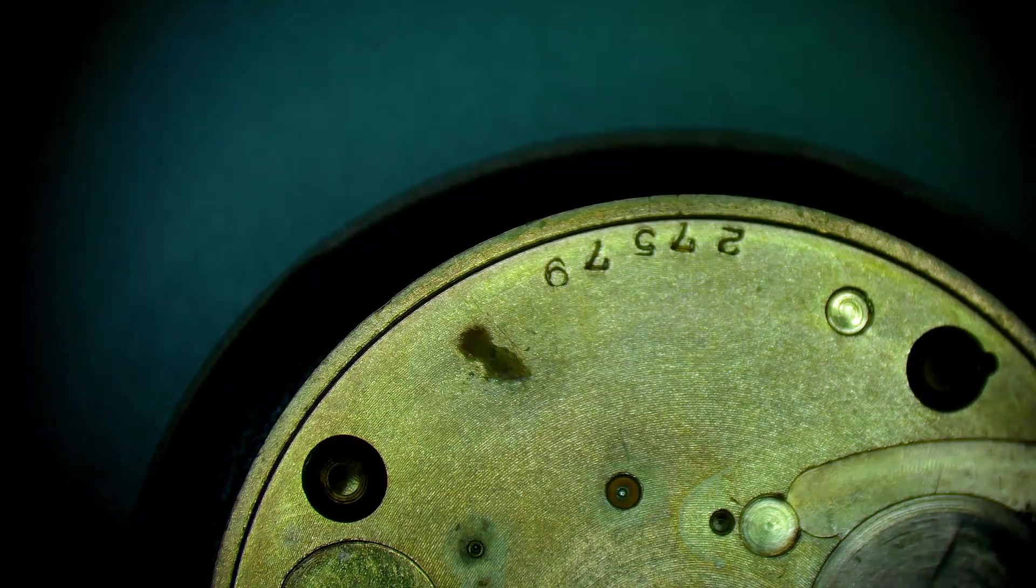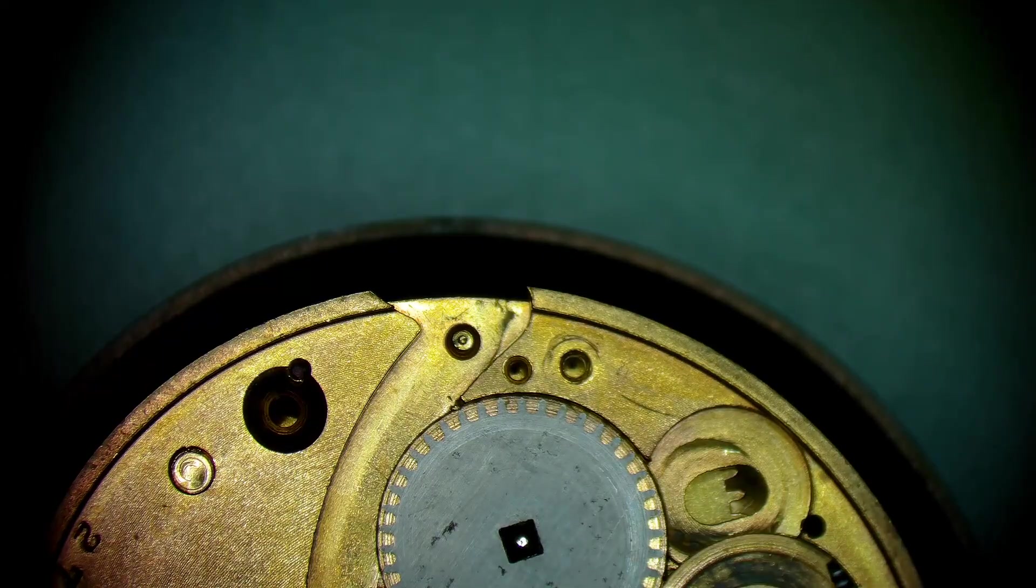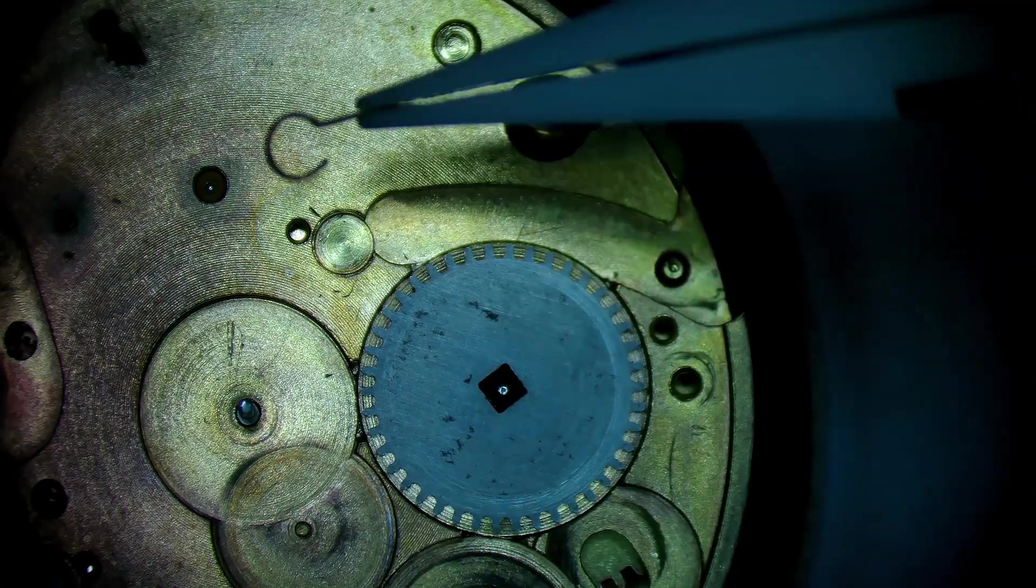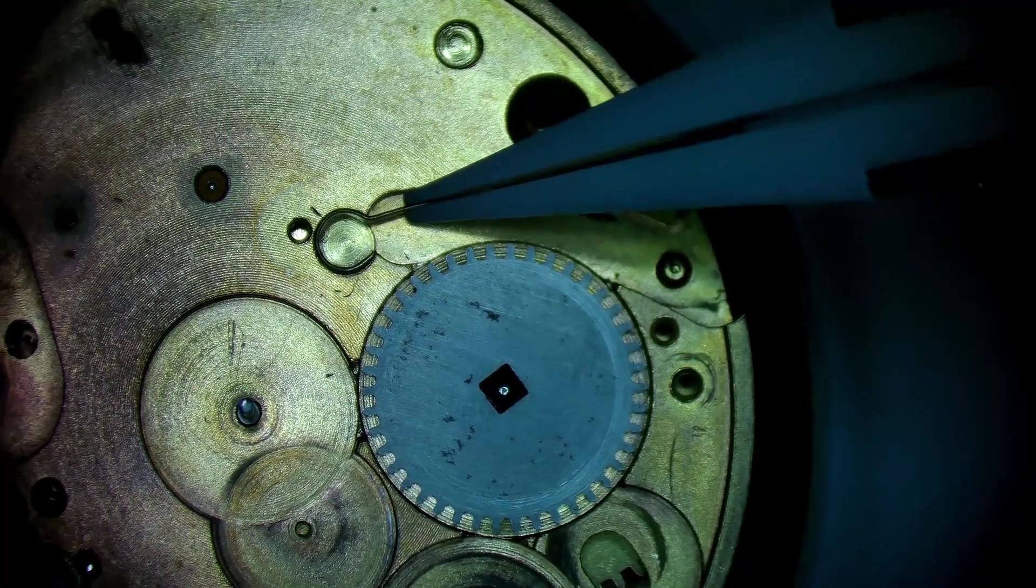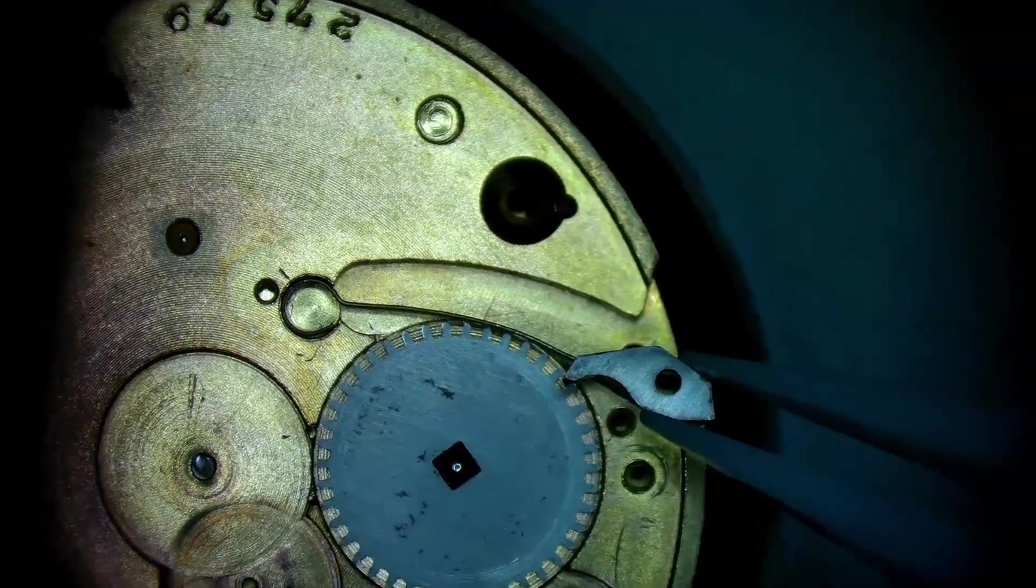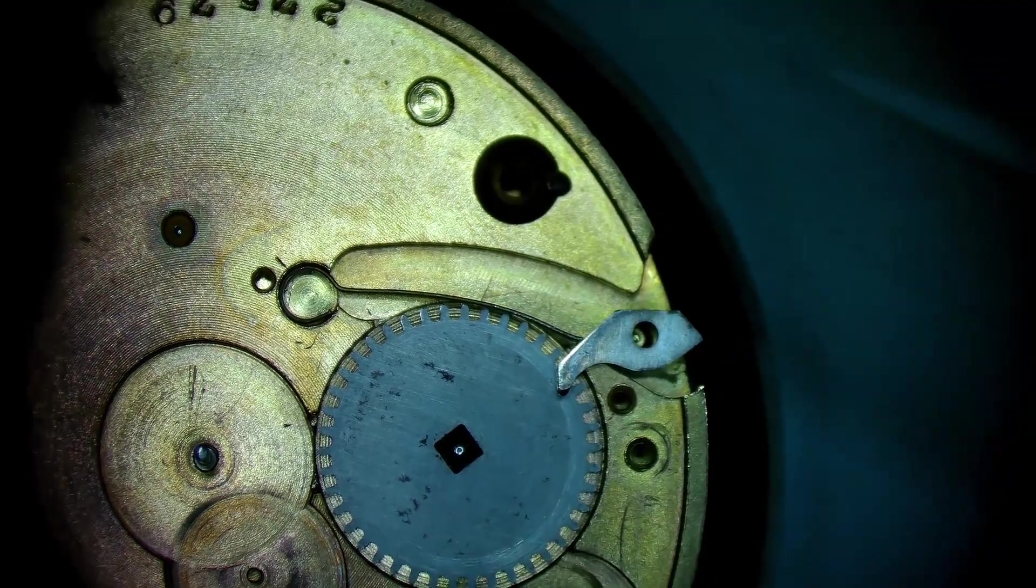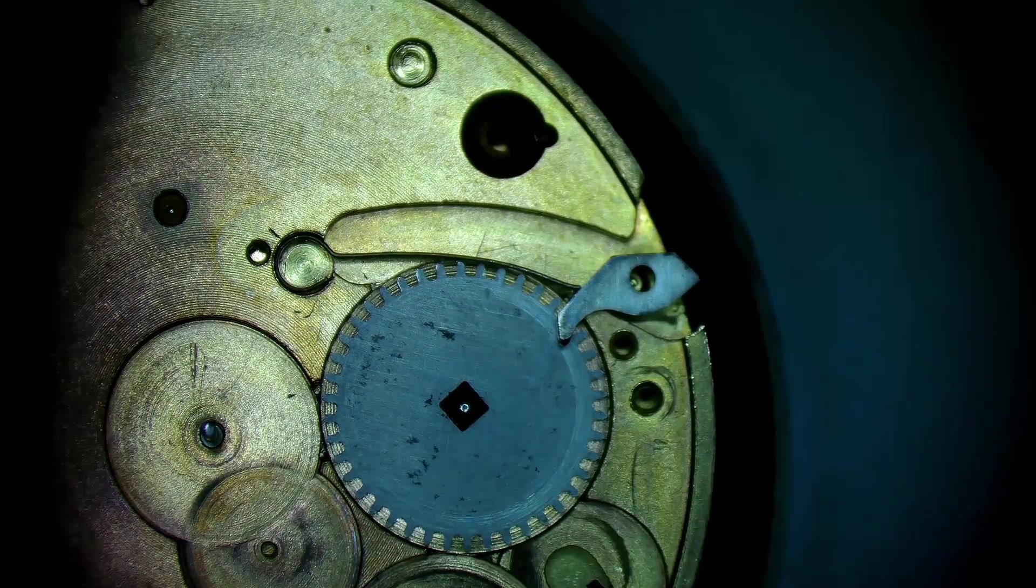Flip this guy over, go to the dial side. Now we're going to get everything situated. This is the click. And this is somewhat difficult. This is an interesting way to do the click, but it seems to work. Now that spring is under tension right now, and I'm going to add some more tension to it. So it's going to want to fly across the room at 60 miles an hour.